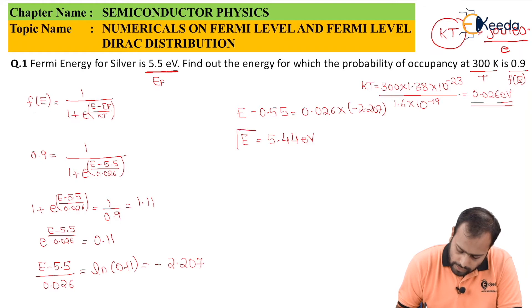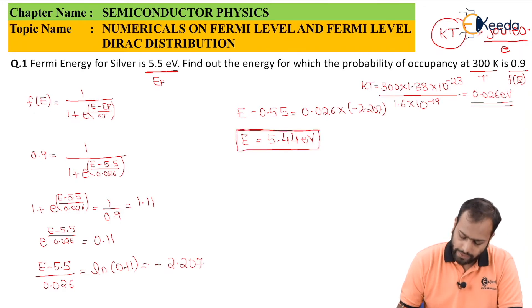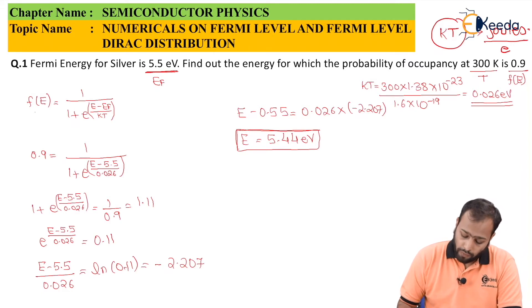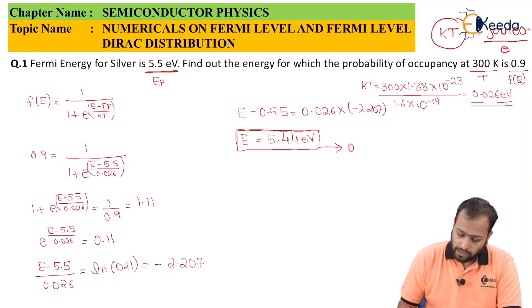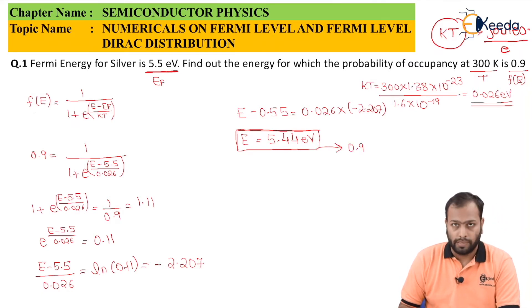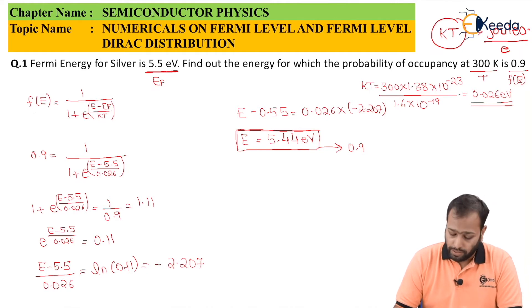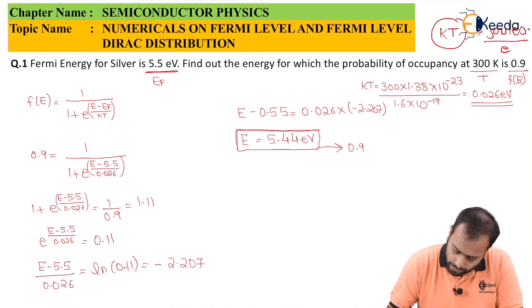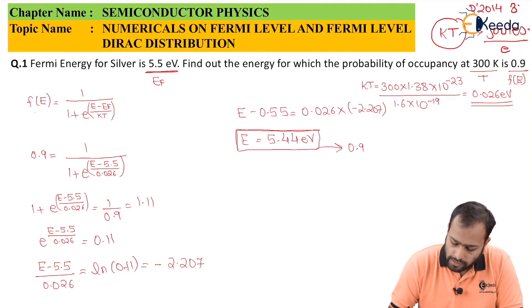This is the energy needed — the energy for which the probability is 0.9, or 90%. This question had appeared in December 2014 for three marks.